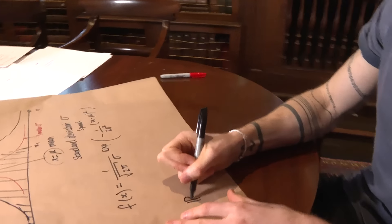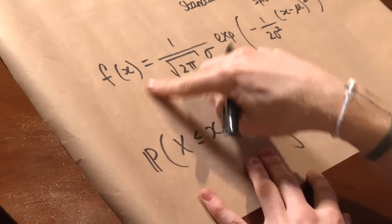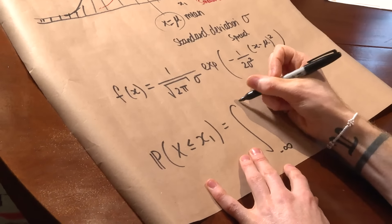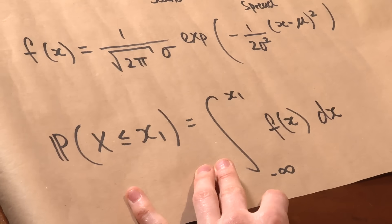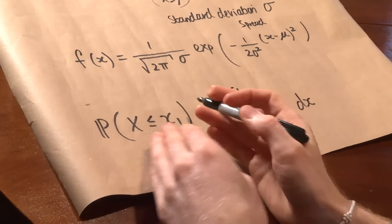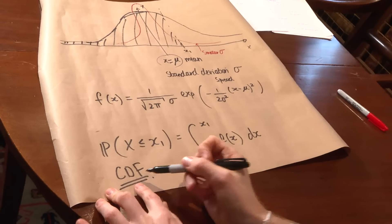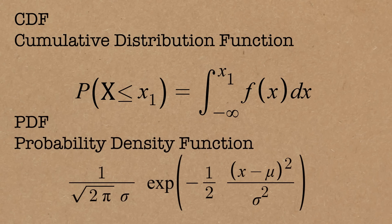If we want to know the probability that x is less than or equal to x1, we can be anywhere from minus infinity up to that x1 value. We have to integrate, because that's how we find the area under a curve. We know the function f of x, so we integrate from minus infinity up to x1. This is called the CDF, or the cumulative distribution function. If we differentiate the CDF — the reverse of integrating — we get back the PDF, the probability density function. You integrate or differentiate to move between the two of them.